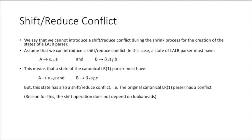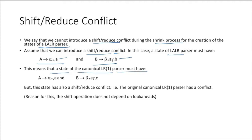What is a shift-reduce conflict? We say that we cannot introduce a shift-reduce conflict during the shrink process for the creation of states of an LALR parser. A state of an LALR parser must have: A → α• with 'a' as lookahead, and B → β•Aγ with 'b' as lookahead. This means the state must have A → α•A and B → β•Aγ.